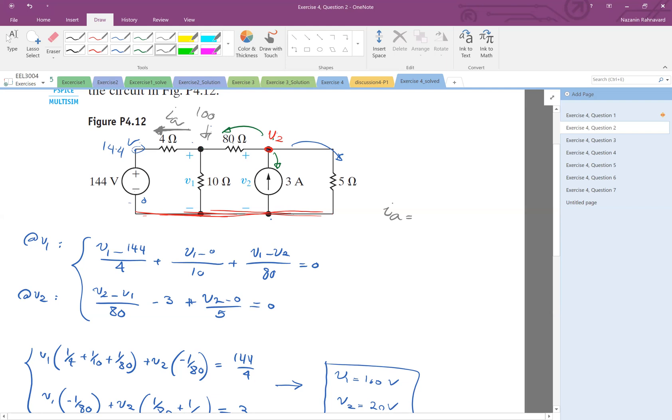If I call this Ia, Ia is this voltage 100 minus 144 divided by 4. That's the current Ia.